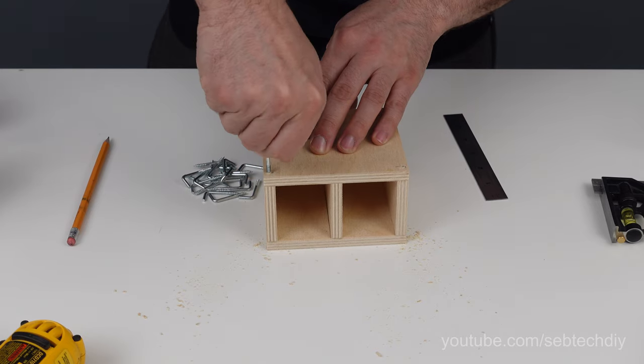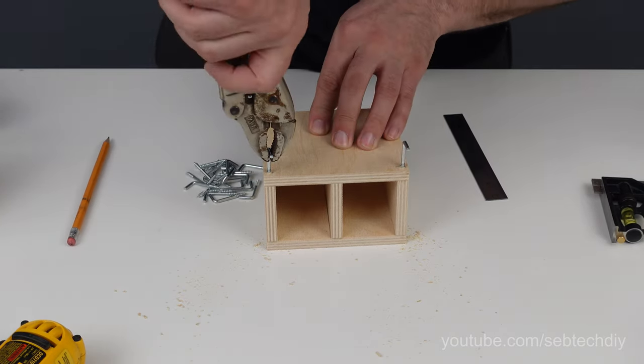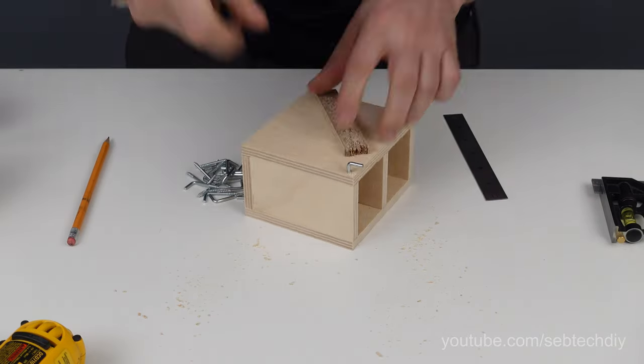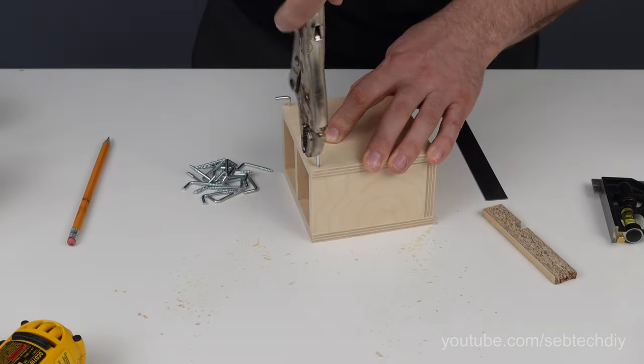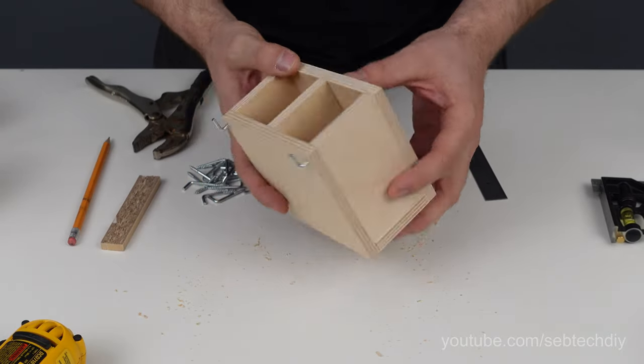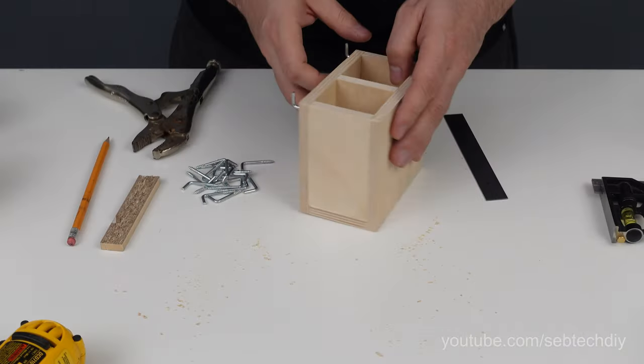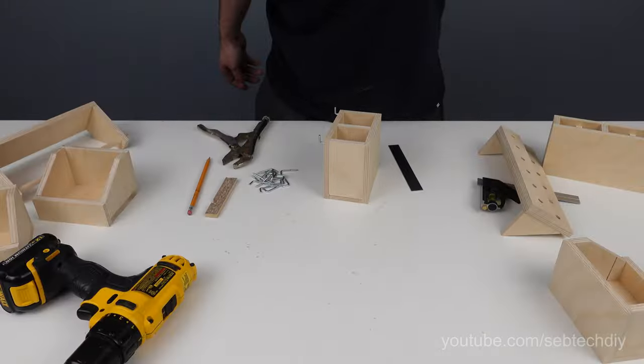Then I start by screwing my L hooks by hand and I finish using my vise grip. The depth of your hooks will depend on the thickness of your pegboard. And now do the same thing for all your organizers and you'll be ready to hook them on your pegboard.